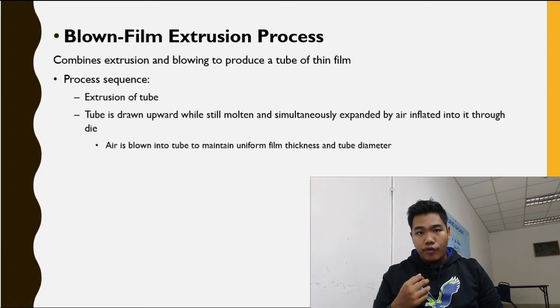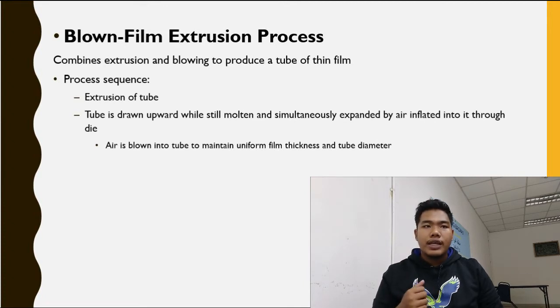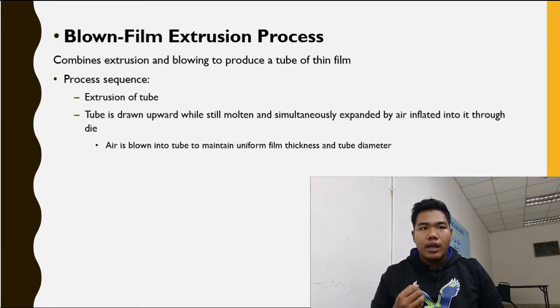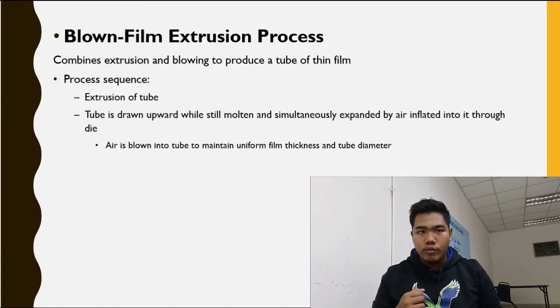Blown film extrusion combines extrusion and blowing to produce a tube of thin film. The process sequence is: extrusion of the tube, the tube is drawn upward while still molten, simultaneously expanded by air inserted into the die, and air is blown into the tube to maintain uniform film thickness and tube diameter. The last sub-method is calendaring, where feed stock is passed through a series of rolls to reduce thickness to the desired gauge. This method involves expensive equipment but achieves a higher production rate, good surface finish, and high gauge accuracy.